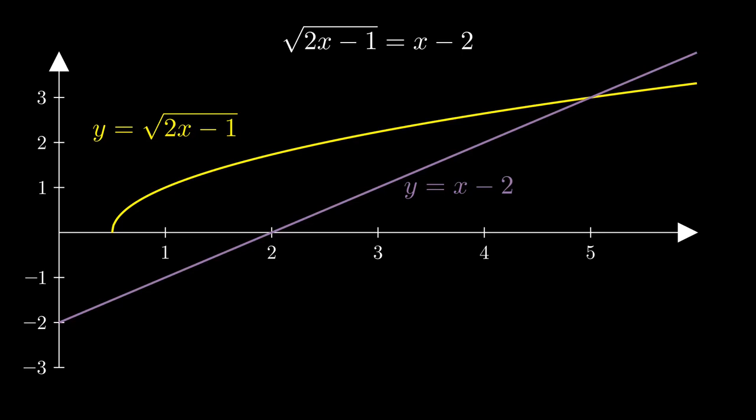You may think we've made things more complicated by turning one equation into two, but drawing these graphs lets us immediately see the solution to our original problem. The left side of the equation will be equal to the right when these two graphs intersect one another. We can see that happening when x equals 5, which was the single correct solution we found before.